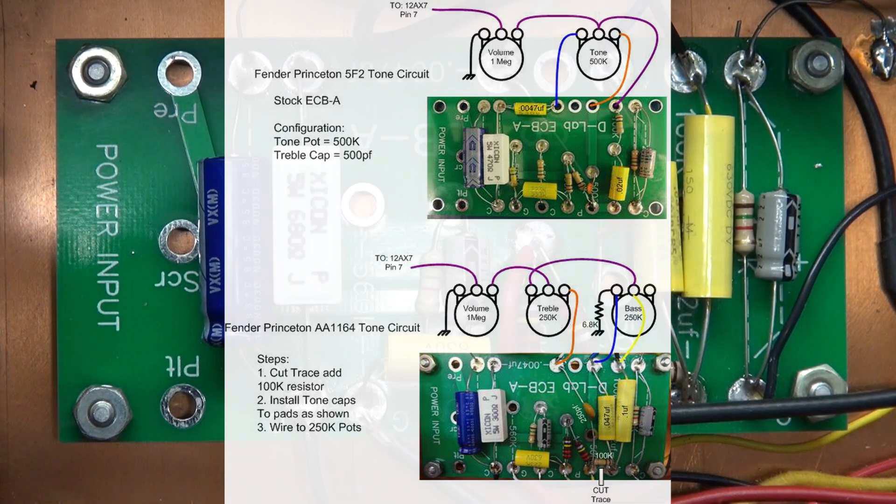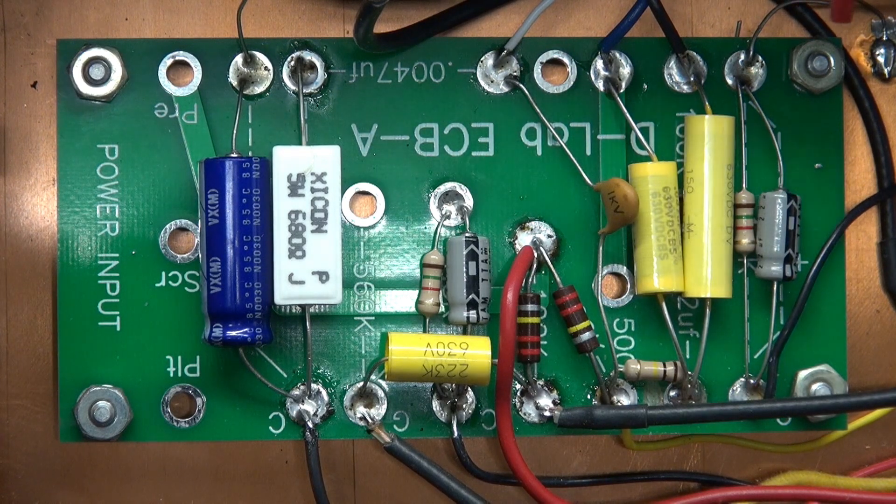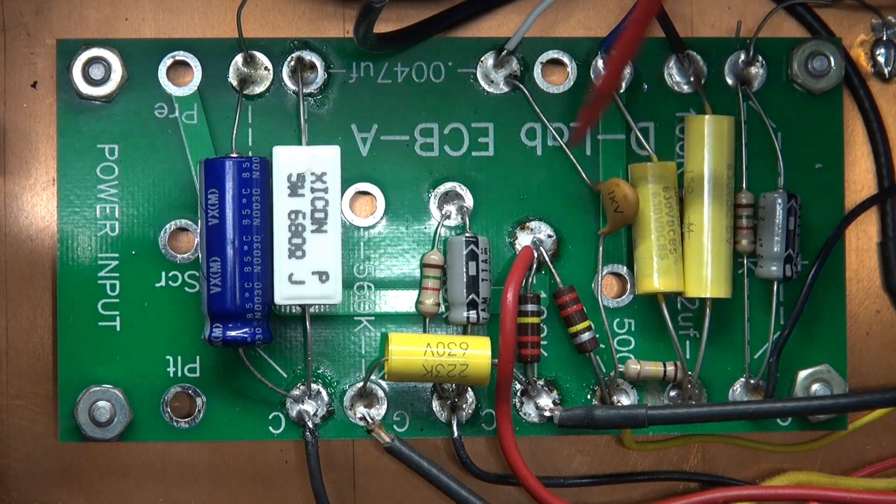Now I'm going to cut back to the modified board because I need to point out a couple of things. So here is the board that I showed you installed in the push-pull amp. This is the new tone circuit.